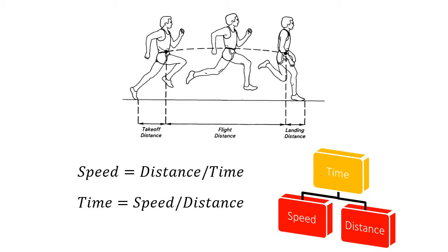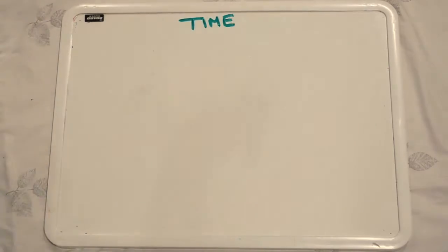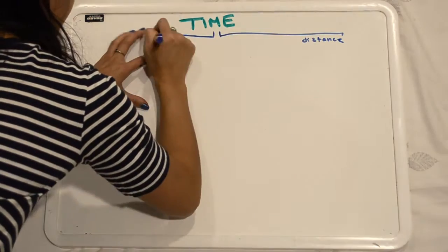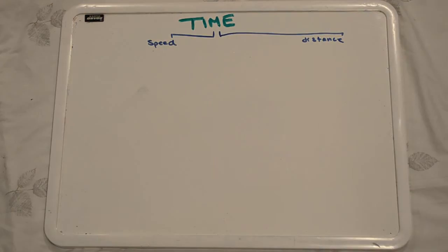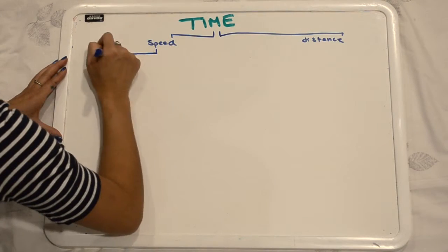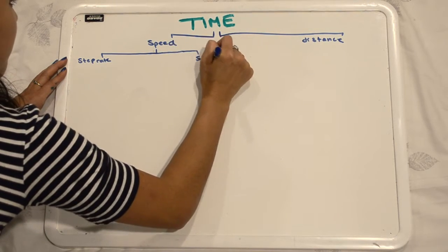Let's examine our example of sprinting again and continue to expand the flow diagram. In this task, you can see how the distance is fixed at 100 meters. However, the speed of the athlete can be modified by changing step rate and step length of the individual.